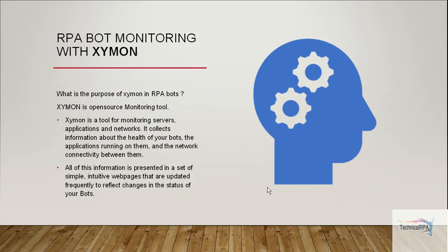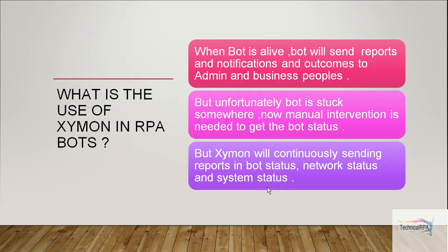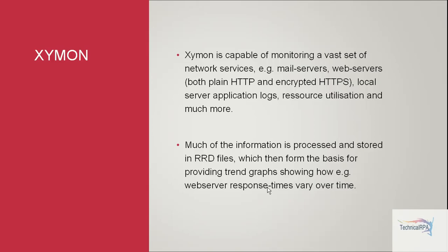All of this information is presented in a set of simple intuitive pages, giving you a dashboard kind of view. Once our bot has been deployed to a particular server, this Xamon server has to be activated. Another bot continuously watches and monitors how many bots — maybe 100, 200, or 500 bots in the deployment server — and these bots are all monitored by the Xamon server. When a bot is alive, it sends reports, notifications, and outcomes to admin and business people.